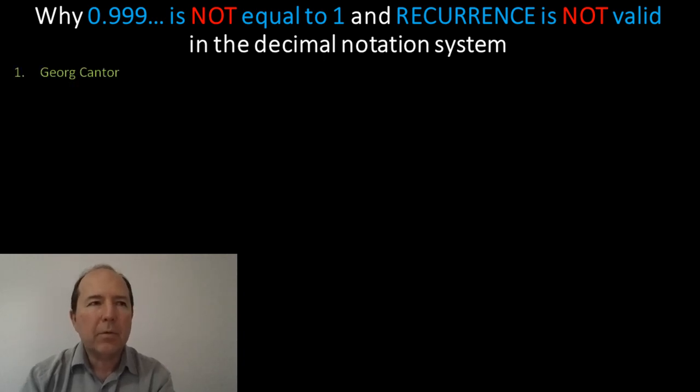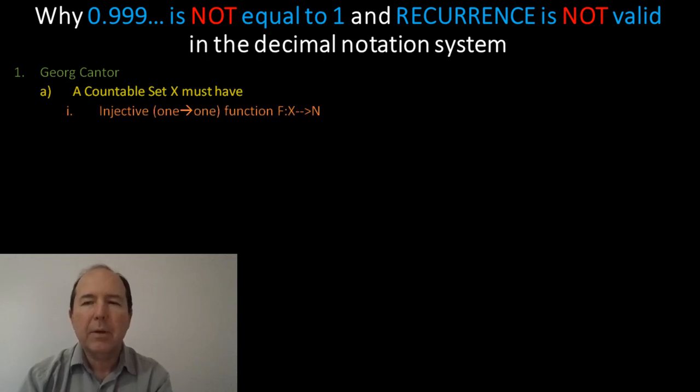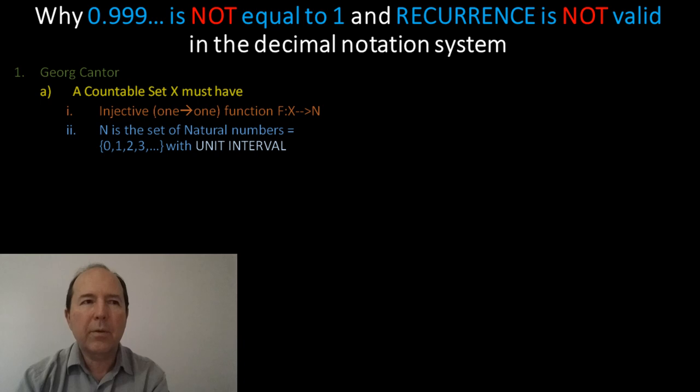Well, firstly Cantor defined the countable set as being a set X, where every member of X is mapped by an injective function into the set of natural numbers. And the set of natural numbers, of course, is the set of positive integers starting with 0, then 1,